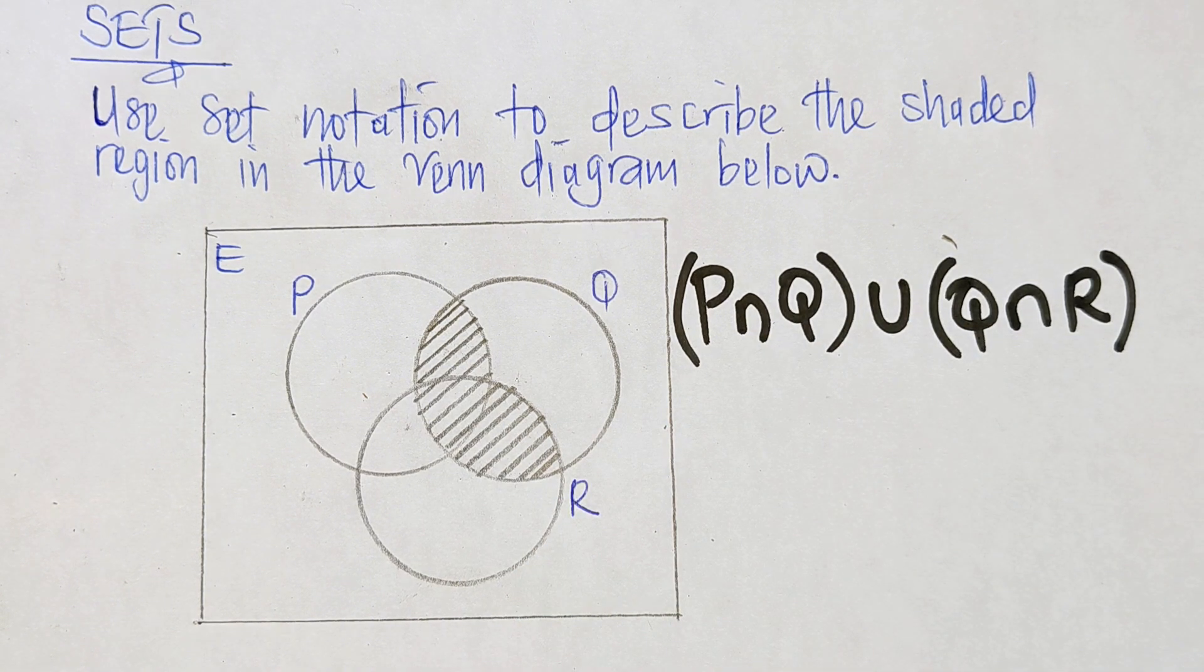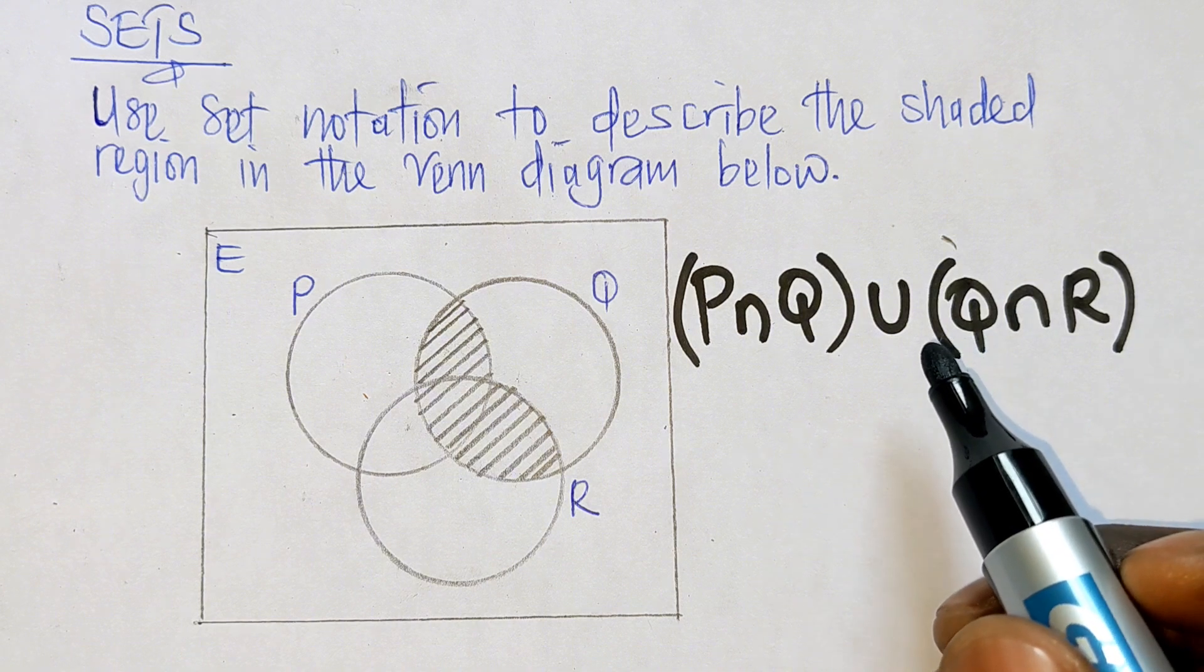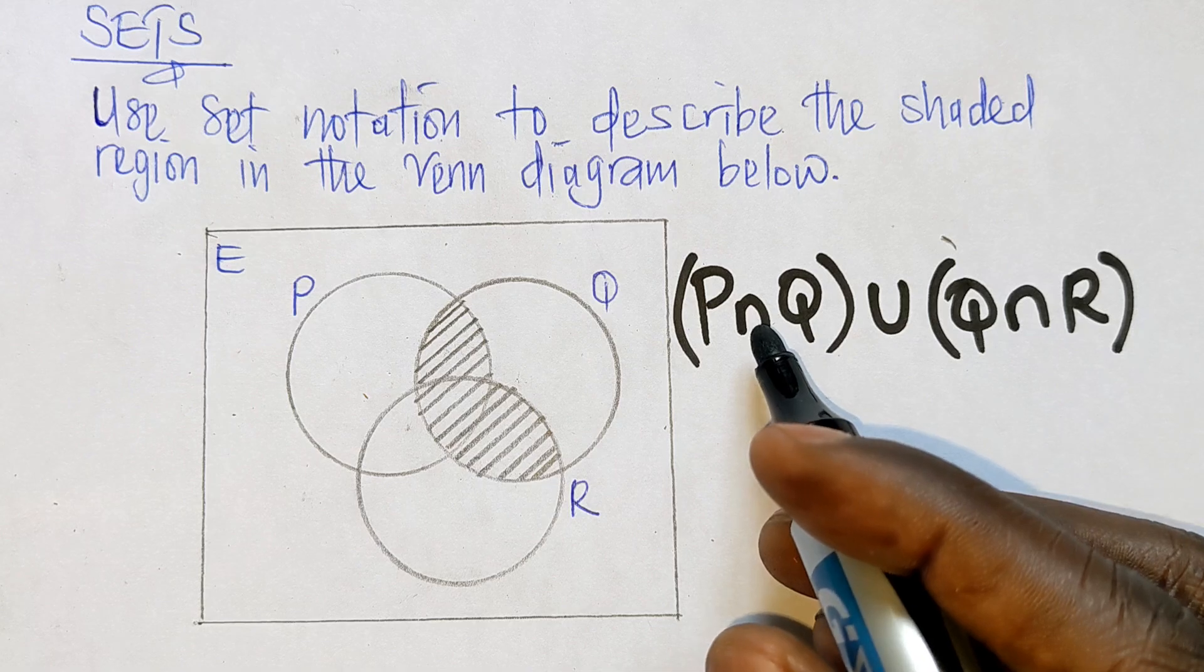...simplify this using the distributive property. So now this is going to be union over intersection. The distributive property is union over intersection.